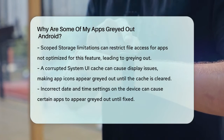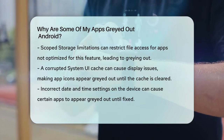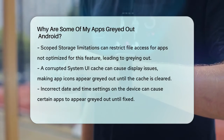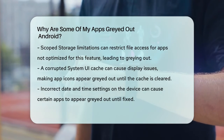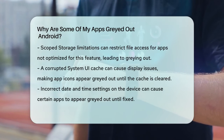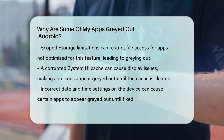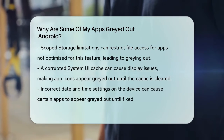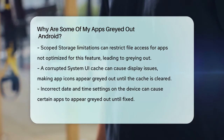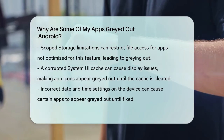Scoped storage limitations, introduced in Android 10, can restrict how apps access shared directories. If an app isn't optimized for scoped storage, it might be grayed out due to restricted file access.